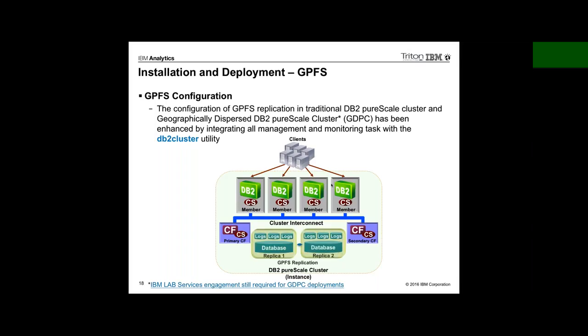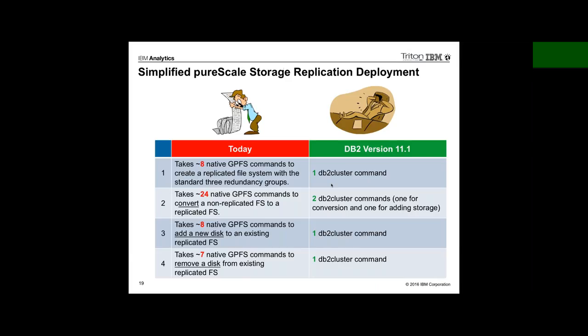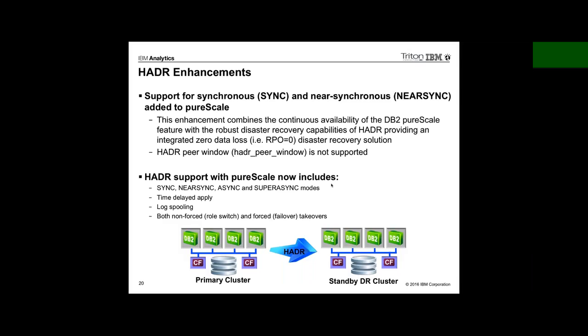GDPC is your ultimate continuous availability solution but it's expensive — requiring specialized dark fiber hardware for cross-site communication, disk replication at two sites, and special switches. Setting it up used to be very complex; for example, turning a file system into a replicated file system used to take about 24 commands, now it's just two commands in PureScale. Deploying GDPC would require IBM lab services to assist, and it's not expected to be used by many customers — it's a very specialized PureScale install.